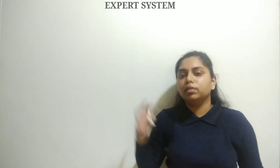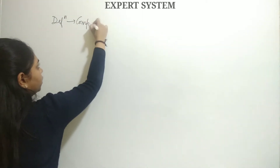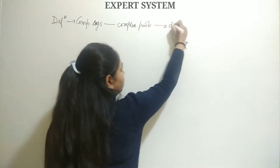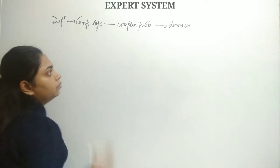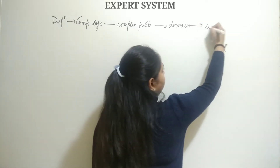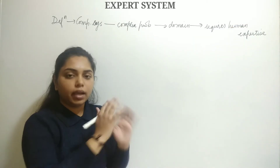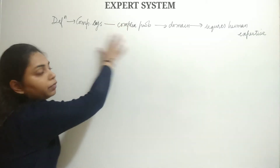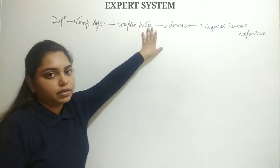Starting with the definition of expert system: what is an expert system? It is a computer system which is designed to solve complex problems in a particular domain or field. It requires human expertise. This is the basic definition of expert system.